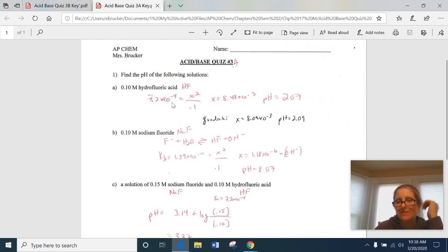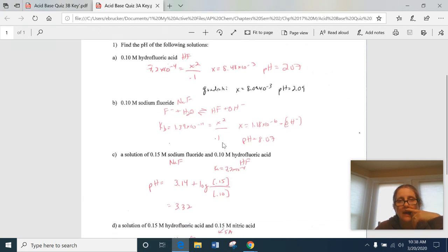This one, because of 10 to the negative fourth, you start to get into an area where you can't really cancel out that X. But for the most part, I'm going to let you do the cancellation. So that's a weak acid. You need to recognize that X squared over the initial concentration equals the Ka.